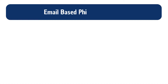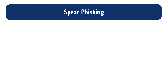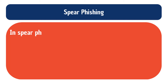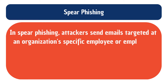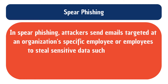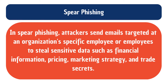Email-based phishing attacks can be further organized into different classes: spear phishing, whaling, and vishing. Spear phishing is a more individualized and targeted approach in which attackers send emails targeting a specific employee or employees within an organization to steal sensitive data such as financial information, pricing, marketing strategy, and trade secrets.